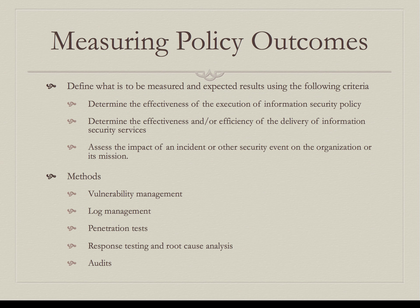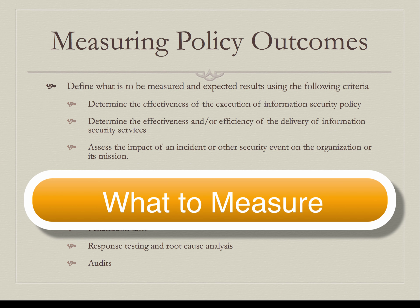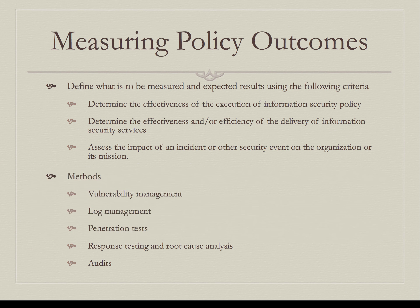When we create policies and define the outcomes, we must measure to ensure those outcomes are being met. When creating metrics for policies, we define what is to be measured and the expected results, following these criteria: determining the effectiveness of the execution of the information security policy, determining the effectiveness and efficiency of the delivery of information security services, and assessing the impact of an incident or other security event on the organization or its mission.